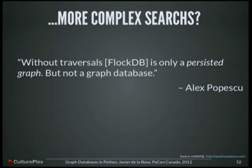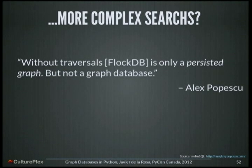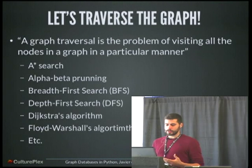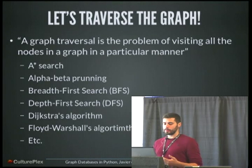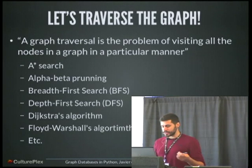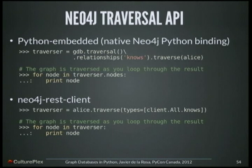But what about more complex searches? Like, I want to know if the friend of a friend is also my friend, or if the friend of my sister is also my cousin. That's where we talk about traversals. Without traversals, a graph database is only a persistent graph. So let's traverse the graph. A graph traversal is the problem of visiting all the nodes in a graph in a particular manner. There are a bunch of algorithms to do that because it's a really old problem — breadth-first search, depth-first search, Dijkstra, Floyd-Warshall. But Neo4j defines an API to do traversals. The syntax is not really friendly, not really easy to understand, and it's really hard to maintain.